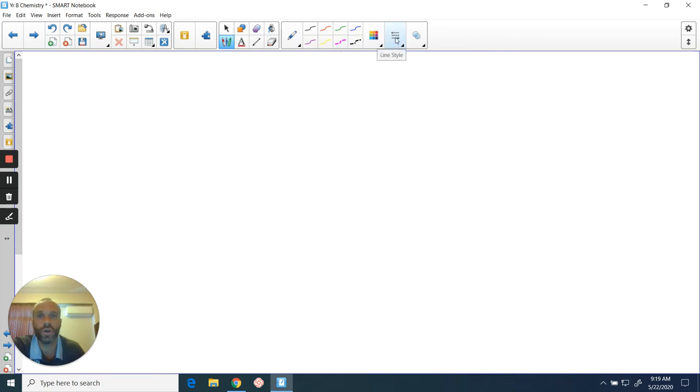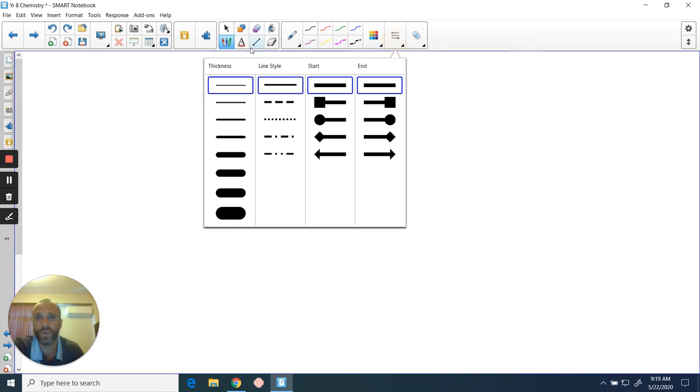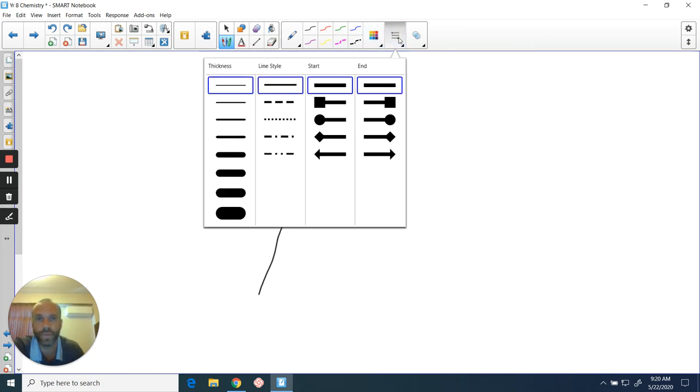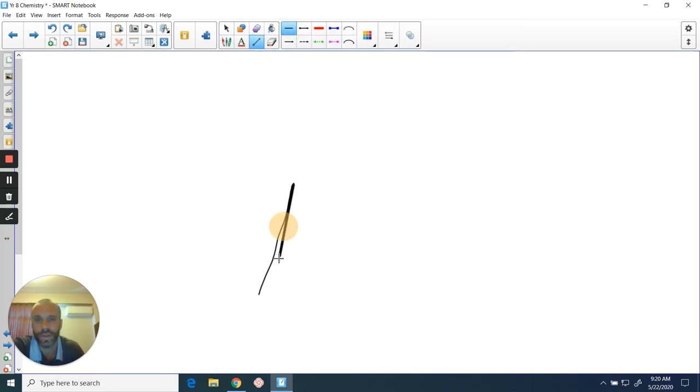So let's try to show how we would draw a diagram that is showing someone heating up some water with a Bunsen burner. You can pause the video now so that you can try to do it before me. Let's have a go. So we've got a tripod.